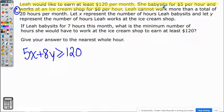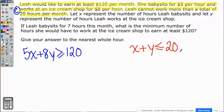Leah cannot work for more than a total of 20 hours per month, so she has a restriction. That means the hours she works babysitting plus the hours she works at the ice cream shop cannot exceed, so has to be less than or equal to 20 hours. But now for Part C, they change it up a little bit.